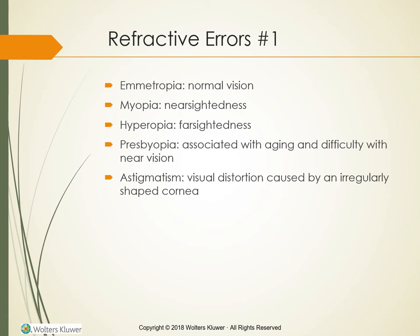Impaired Vision: Refractive Errors. Emotropia, or normal vision, means that light rays are bent to focus images precisely on the retina. In refractive errors, vision is impaired because the eyeball is either shortened or elongated, and therefore light rays cannot sharply focus on the retina. Refractive errors include myopia, hyperopia, presbyopia, and astigmatism.